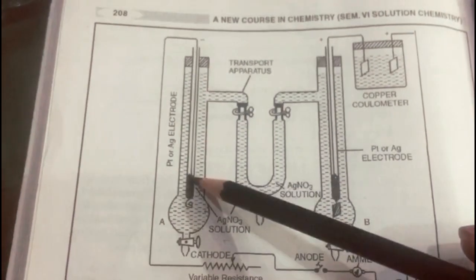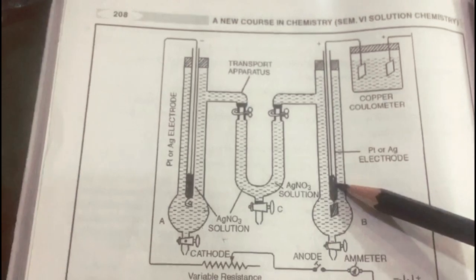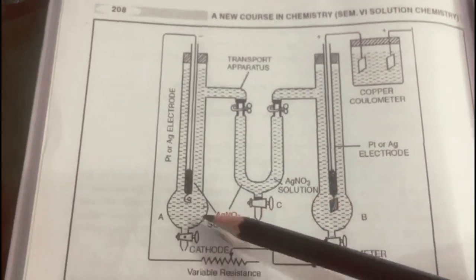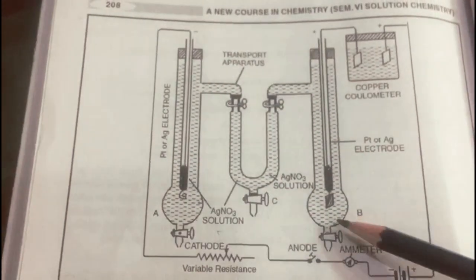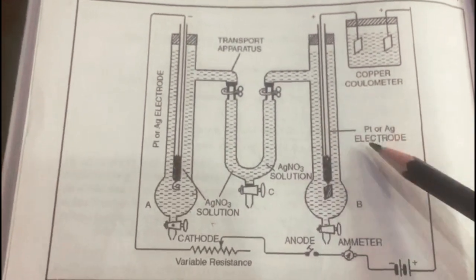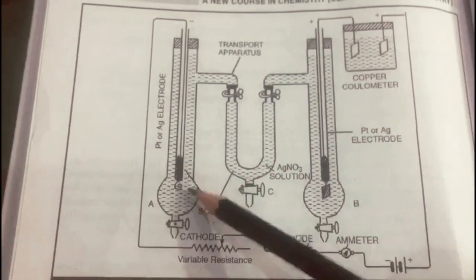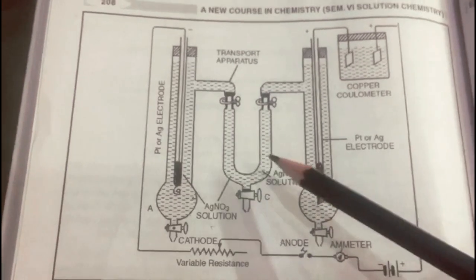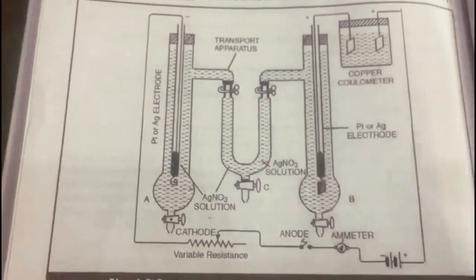The electrode wire is either platinum or silver. The silver electrode is placed inside the glass tube, with a stopcock present. Silver nitrate is the electrolyte, and current is passed through the solution for 2 to 3 hours at 20 to 30 milliamperes. After electrolysis, the stopcock is opened, the solution is taken out, and its concentration is checked. There will be no change in concentration of the solution in the central compartment.